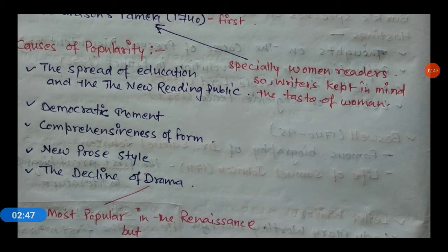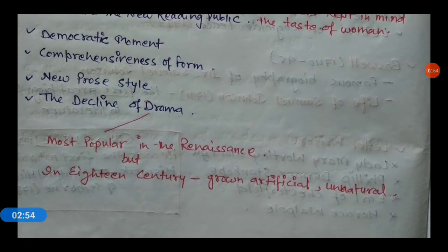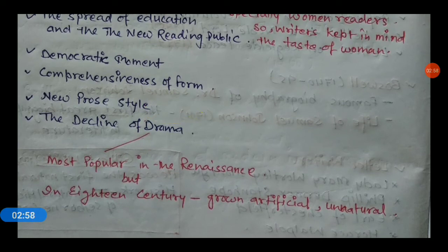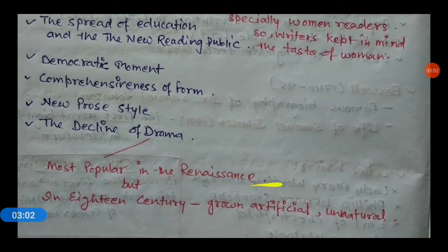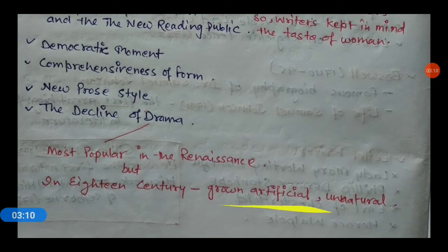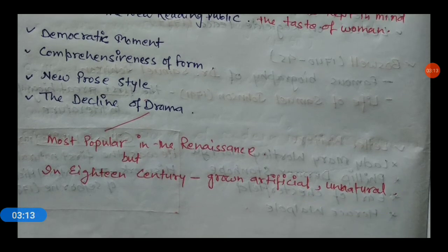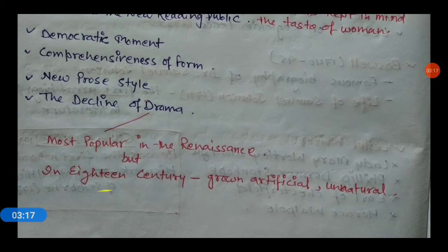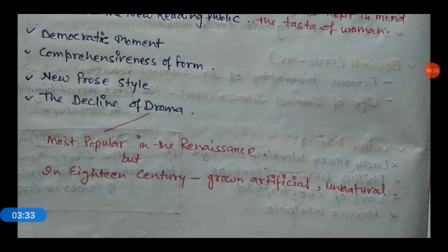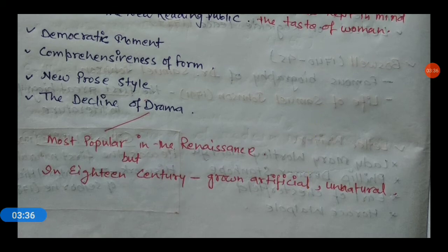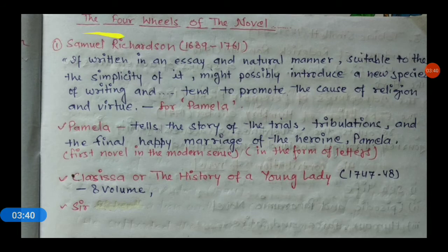Another cause was the decline of drama. Drama was the most popular form in the Renaissance, but in the 18th century it became artificial and unnatural, losing its liveliness. This decline opened the way for the rise of the novel.